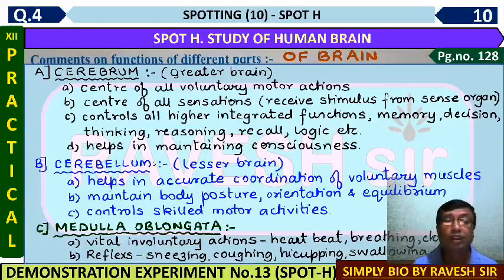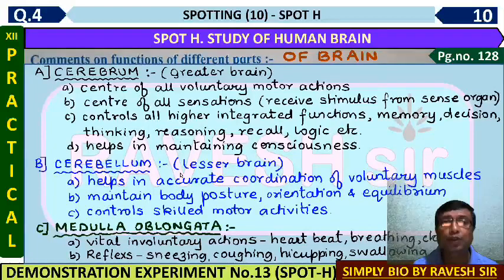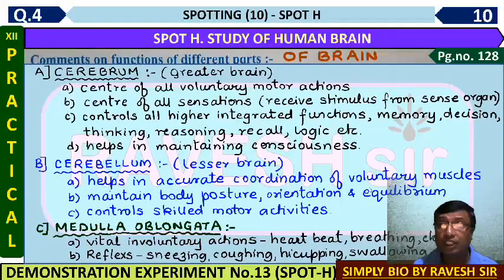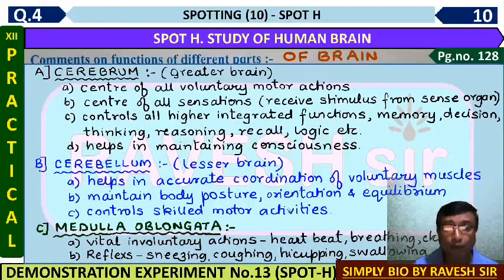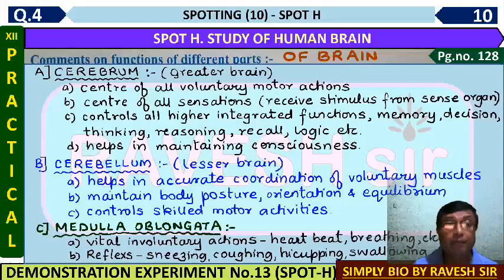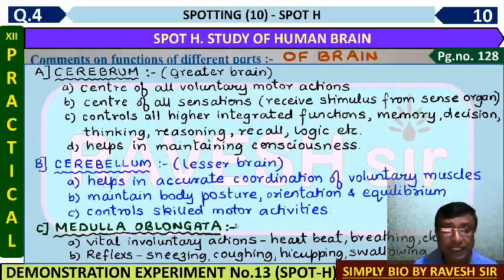On the posterior side, at the back, you can see the cerebellum, which is called the lesser brain. It helps in accurate coordination of voluntary muscles. Cerebellum controls body posture, orientation, and equilibrium. Cerebellum also controls skilled motor activity and artistic activities.